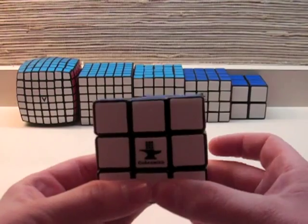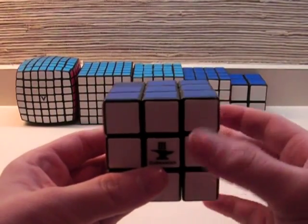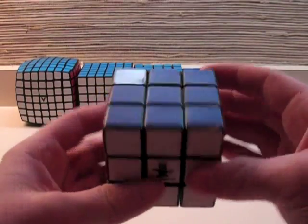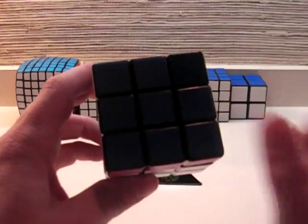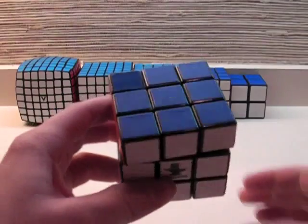And then that same idea can be applied to all six sides. So, a U, as shown at the bottom without an apostrophe, is just turning the up face clockwise once. Then a U prime is turning the up face counterclockwise once.